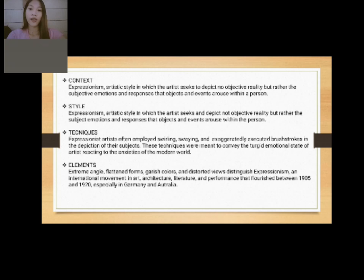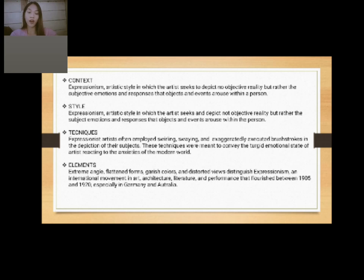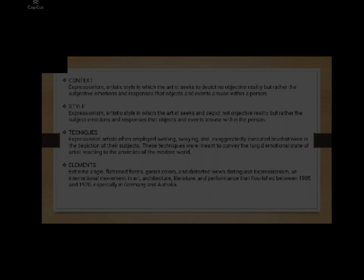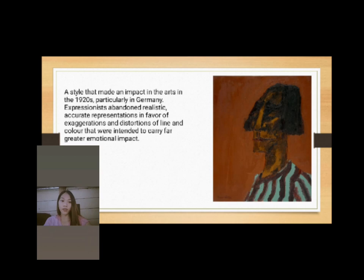Techniques: Expressionist artists often employed swirling, swaying, and exaggeratedly executed brush strokes in the depiction of their subjects. These techniques were meant to convey the turbulent emotional state of artists reacting to the anxieties of the modern world. Elements: extreme angles, flattened forms, garish colors, and distorted views distinguished Expressionism — an international movement in art, architecture, literature, and performance that flourished between 1905 and 1920, especially in Germany and Austria. Expressionists abandoned realistic representations in favor of exaggerations and distortions of line and color intended to carry greater emotional impact.